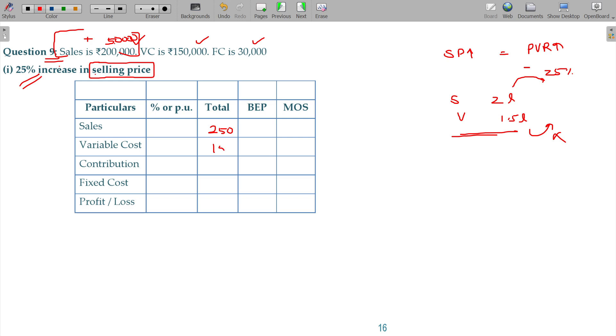Variable cost change. If selling price changes, then sales changes. But what is the change? Total variable cost will not change, that is 150. Contribution will have the impact over that. And as per that, PVR will also be changed.